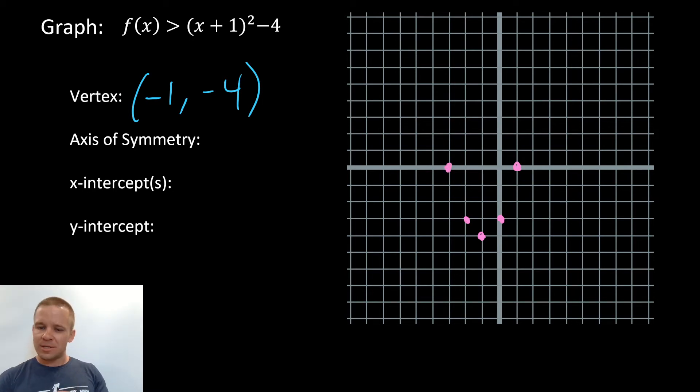But just in case you don't believe me, let's check it out. If I plugged in 1, 1 plus 1 is 2. 2 squared is 4. 4 minus 4 is... It's 0, bro. It did work. I wouldn't have lied to you. I've made mistakes, but I didn't intend to lie to you if I made those mistakes.